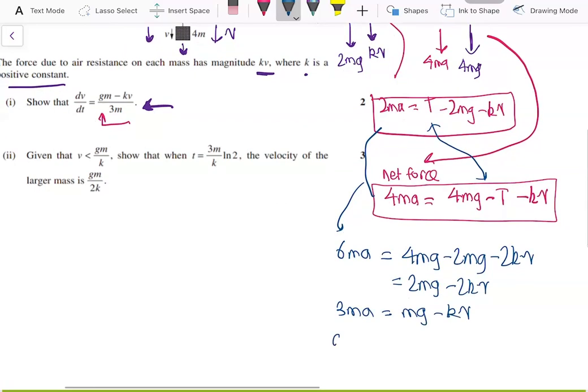So the acceleration dv/dt is equal to (mg minus kv) over 3m. So that is the same as part i, so part i is complete.